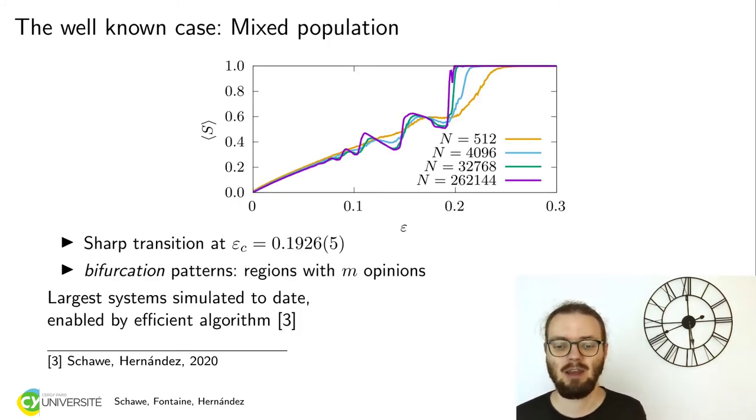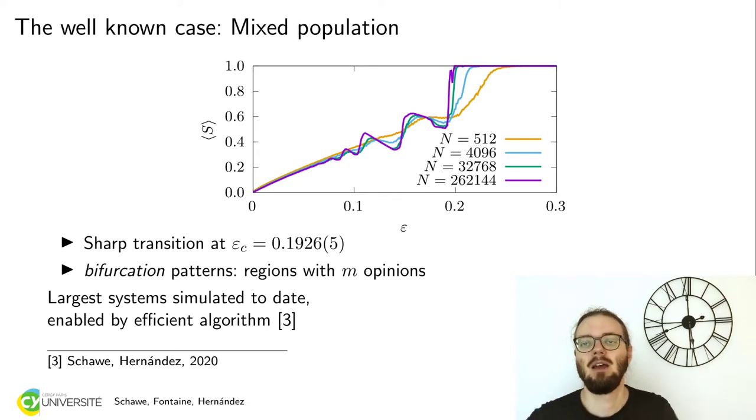First let's look at the complete graph, the mixed population case. Here you can see some patterns. Generally if you increase the confidence on the horizontal axis, then you also increase the size of the largest cluster. That is not smooth, you see there are some jumps. You can see here the critical point where you change from a state where you have two opinion clusters, which we call polarization, to consensus and even unanimity in this case.